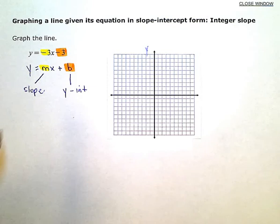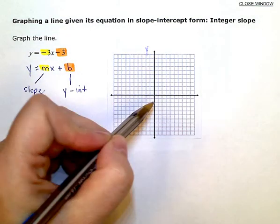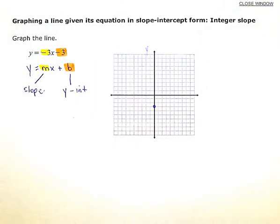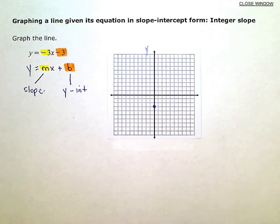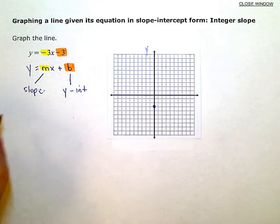So the negative 3 is my y-intercept. So on the y-axis, I go down 1, 2, to negative 3 and put a dot. I know that's where my line is going to cross that axis. And from there, I'm going to use my slope to get some more points and figure out which direction my line goes.